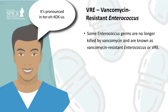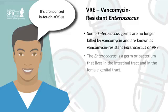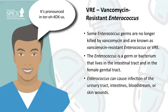Vancomycin-resistant enterococci, or VRE, are a type of bacteria called enterococci that have developed resistance to many antibiotics, especially vancomycin. Enterococcal bacteria live in our intestines and female genital tract, usually without causing problems. Enterococcal bacteria become a problem when they cause infection. These infections can occur anywhere in the body. Some common sites include the urinary tract, intestines, bloodstream, and wounds. For some people, especially those who are weak or ill, these infections can become serious.